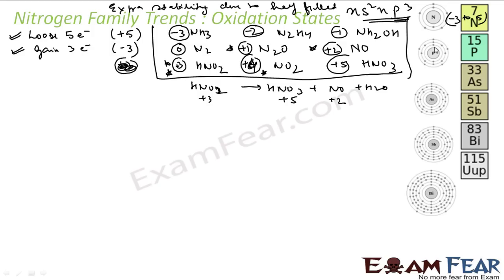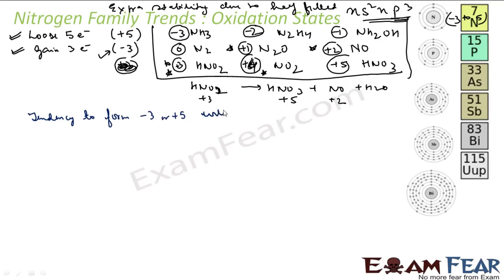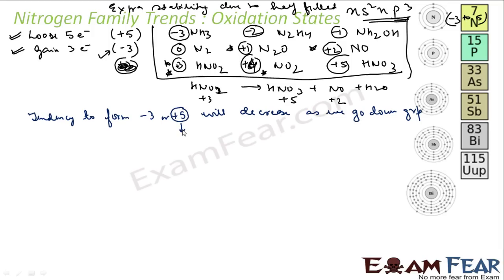If you go down the group, the tendency to form both -3 and +5 will decrease. The tendency to form +5 decreases because of the inert pair effect, which we discussed at the beginning of the chapter.